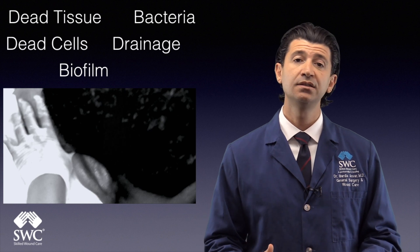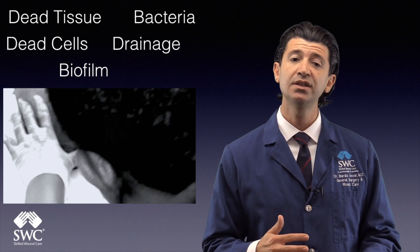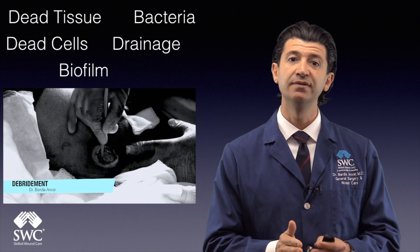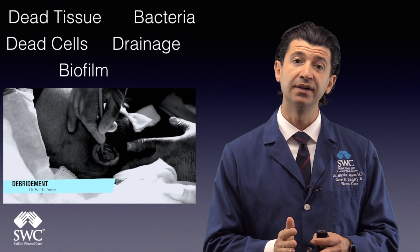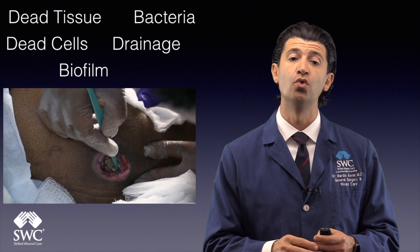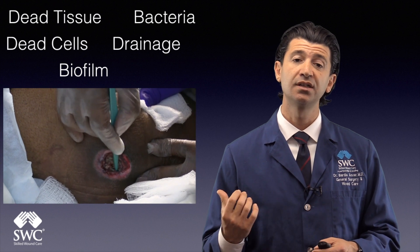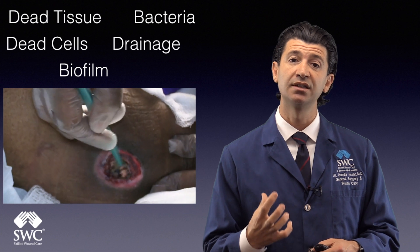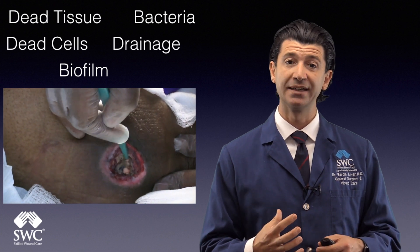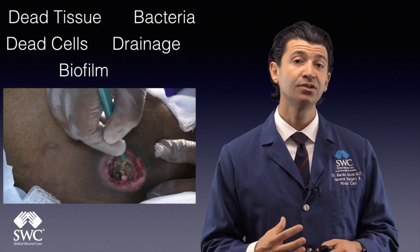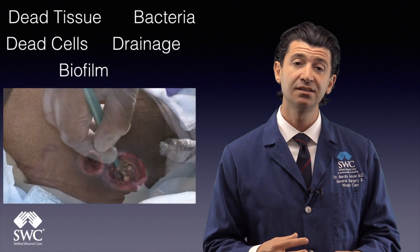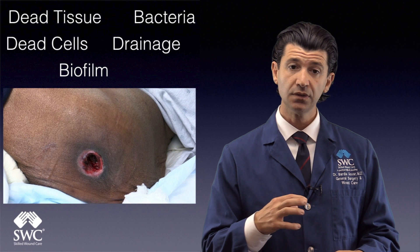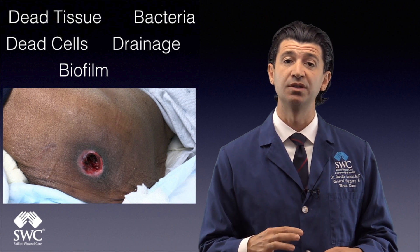So why are we performing these debridements on these wounds? We're performing the debridement to remove dead tissue, which is devitalized tissue. This could be in the form of slough or necrosis, like we see in this debridement here. Much of that slough and necrotic tissue is covered in bacteria, and dead cells — known as senescent cells — are within the wound. So we're also debriding and removing a lot of the cells that are no longer functioning properly.